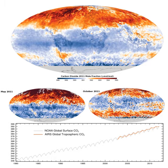While CO2 absorption and release is always happening as a result of natural processes, the recent rise in CO2 levels in the atmosphere is known to be mainly due to human activity. There are four ways human activity, especially fossil fuel burning, is known to have caused the rapid increase in atmospheric CO2 over the last few centuries.